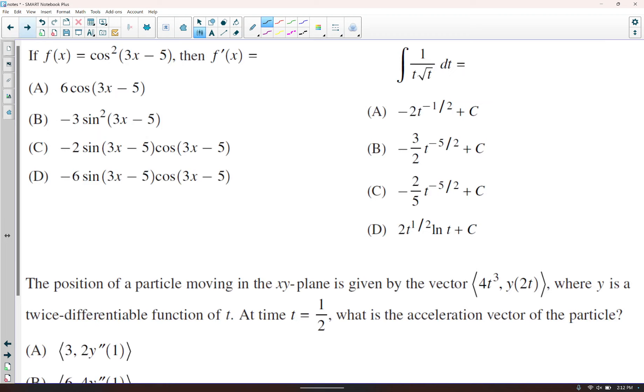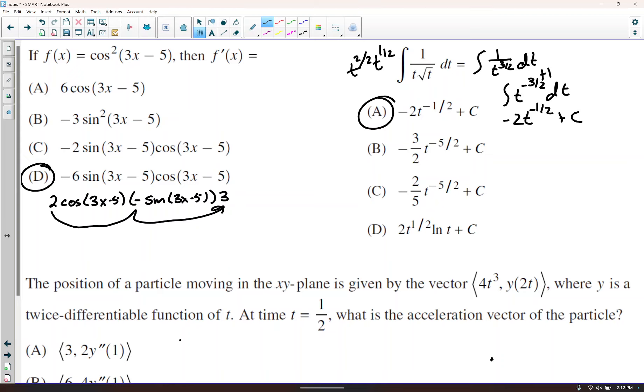So if f of x equals cosine squared, let's do the derivative. So we have 2 cosine of 3x minus 5 times negative sine of 3x minus 5, and then times the derivative of the inside of that is 3. So 2 times negative times 3 is negative 6. So it's got to be letter D. Here we can change this to 1 over t to the 2 halves, and times t to the 1 half is t to the 3 halves dt. But that's like taking the integral of t to the negative 3 halves. So if we add 1 to this, we get t to the negative 1 half, but then times negative 2 plus c. So letter A.